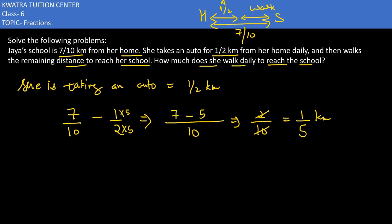How much she would be walking everyday? She would be walking 1 by 5 km everyday to reach her school.